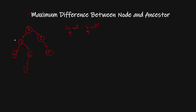If we see clearly, if I do 8 minus 3, it will give me 5. If I do 8 minus 4, it will give me 4. So through all the pairs, I have to find the maximum difference.